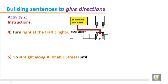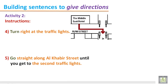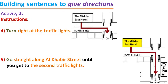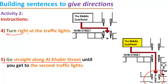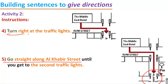Go straight along Al-Khabir Street until you get to the second traffic lights. This is the Al-Khabir Street. You can see from the traffic lights — first get the right turn and after that go straight along Al-Khabir Street until you come to the second traffic lights. This is the second traffic lights, and you have to go straight along Al-Khabir Street until you reach there.